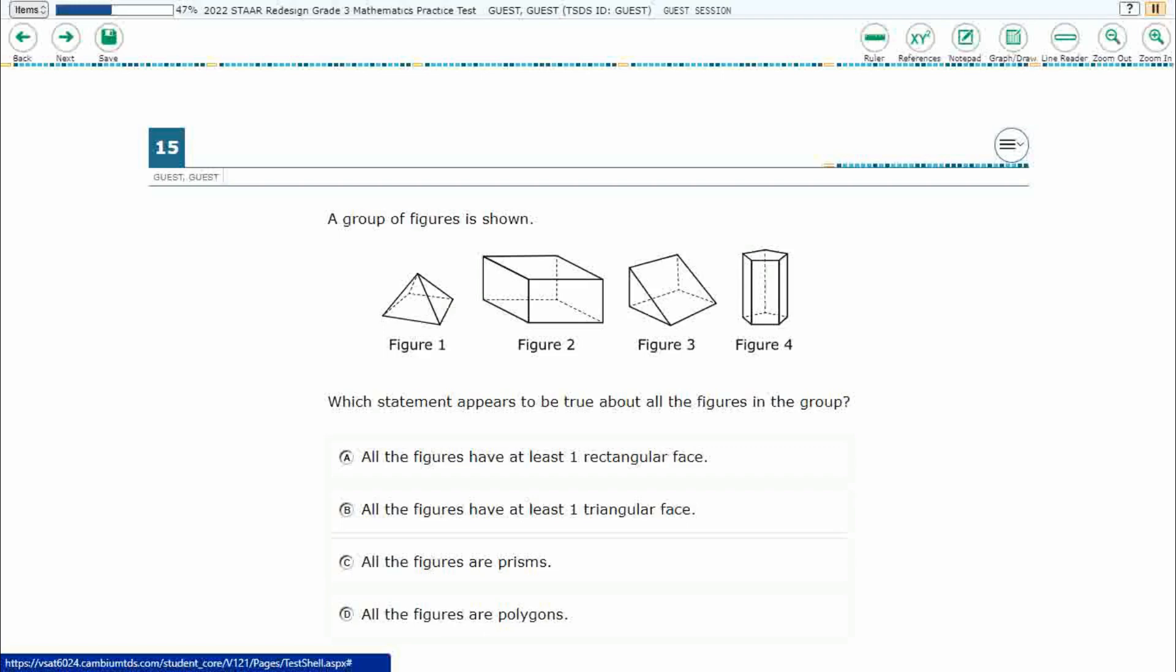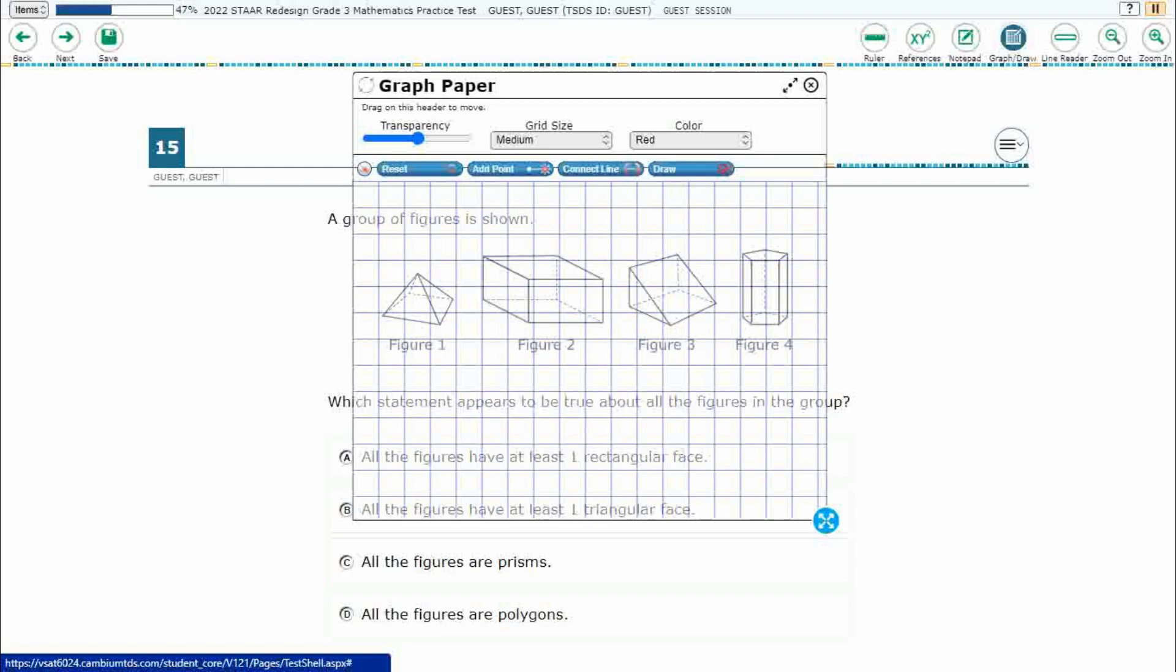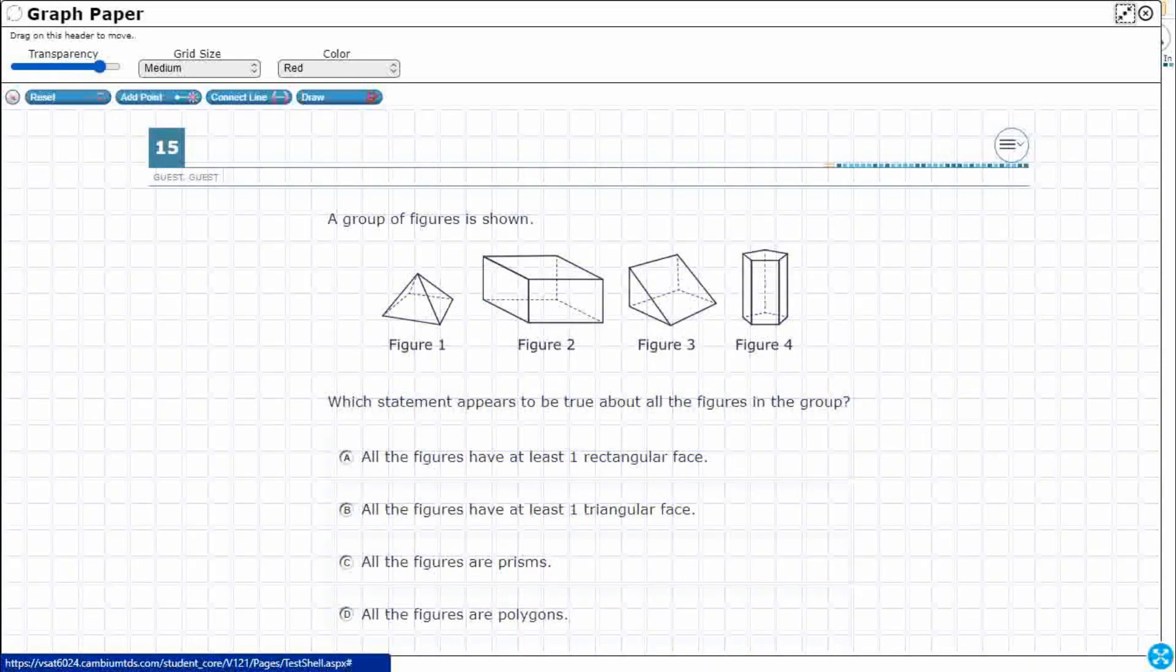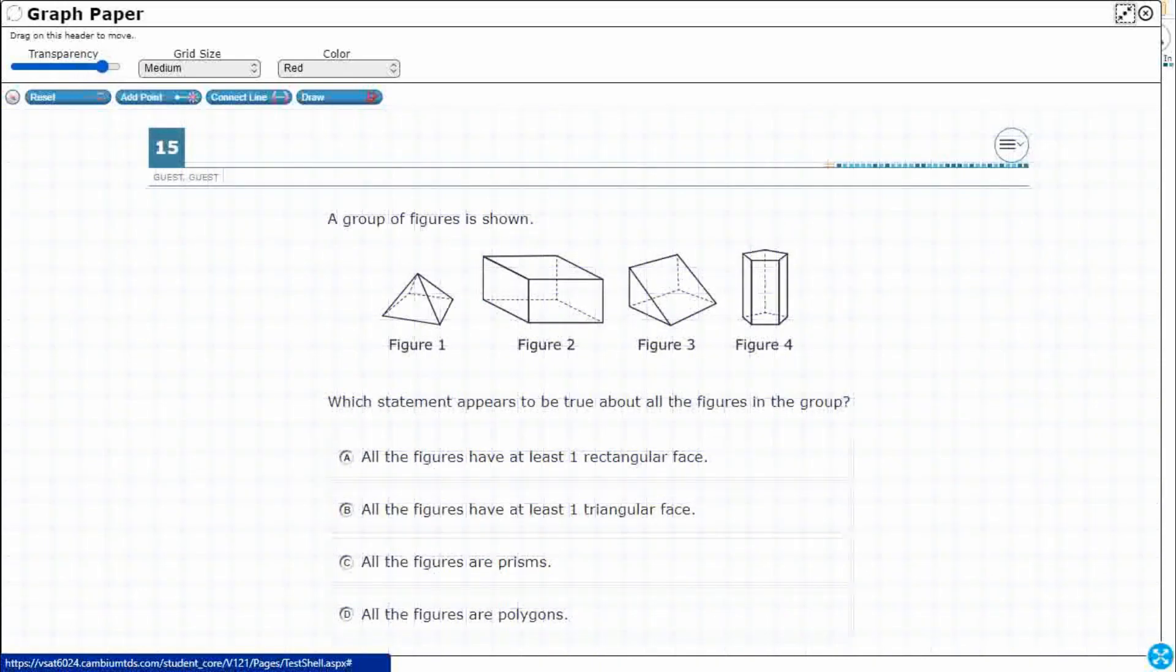So, we've got four different figures and we just need to find a statement that appears to be true about all the figures in the group. Let's turn on our Graph Draw feature, expand it, make it a little bit more transparent, turn on our Draw feature. Now we can annotate all over this. So what statement appears to be true about all the figures? We need to find something true about all four of these figures.